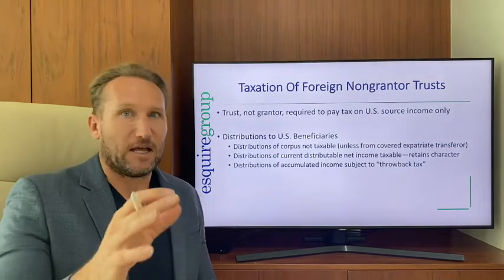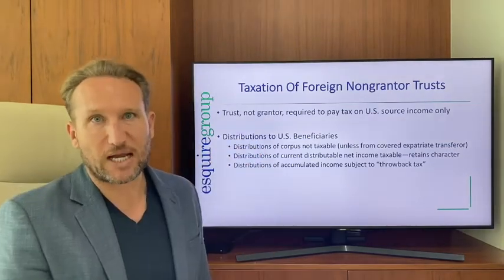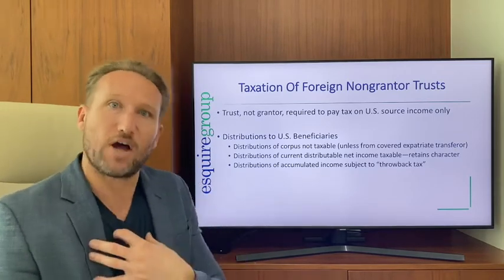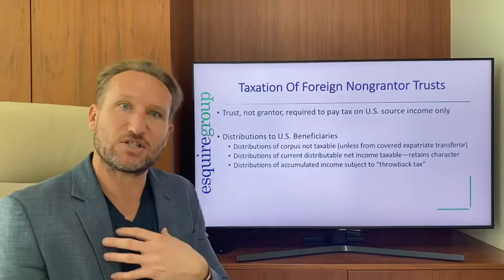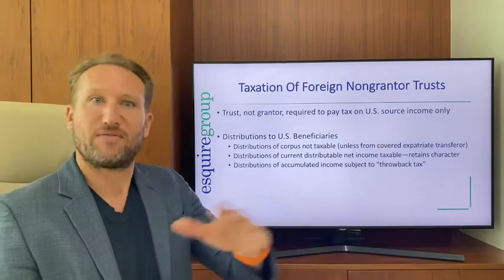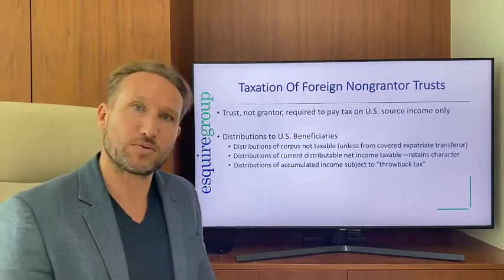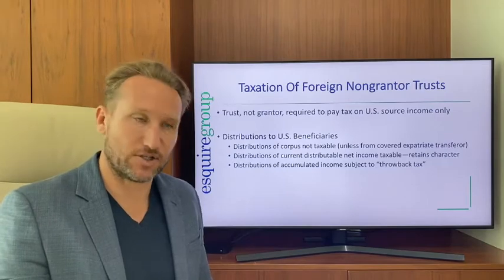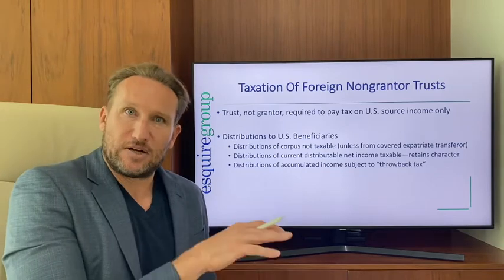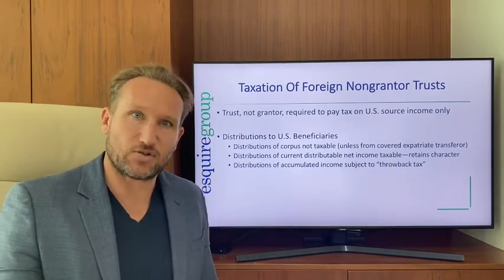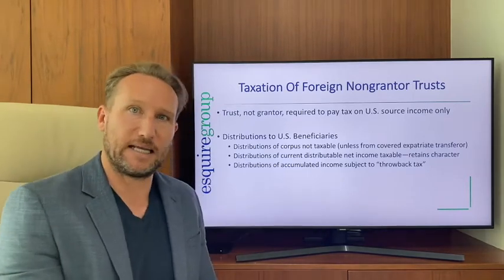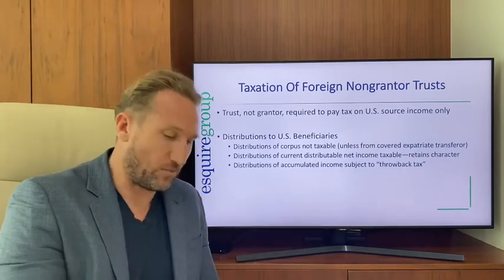This is different from a foreign grantor trust, where it's the U.S. grantor or non-resident alien grantor who pays tax on the trust's income. The trust isn't paying tax in its own right, and the beneficiaries — with proper forms — also don't have to pay tax on distributions. In a non-grantor trust, the grantor is not paying tax; the trust pays tax on its own U.S. source income.